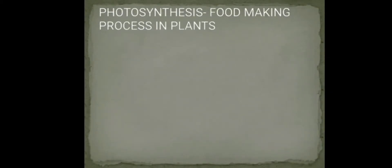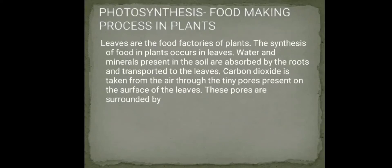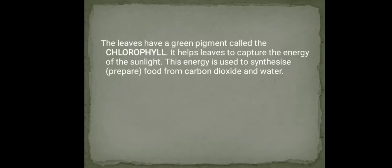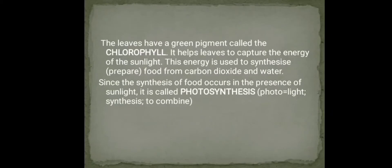Photosynthesis is the food-making process in plants. Leaves are the food factories of plants. Water and minerals present in the soil are absorbed by the roots and transported to the leaves. Carbon dioxide is taken up from the air through tiny pores on the surface of the leaves, surrounded by guard cells — these pores are called stomata. The leaves have a green pigment called chlorophyll, which helps capture the energy of sunlight.